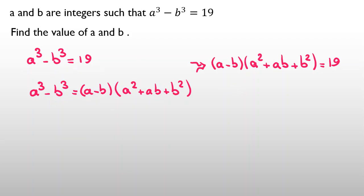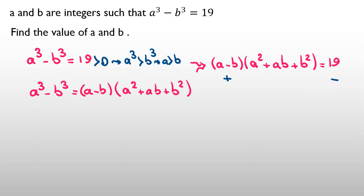Now we know that 19 is positive, so a³ minus b³ is positive, which means a³ is greater than b³, and we conclude a is greater than b. So a minus b is positive. Since the product is 19 which is also positive, this second factor is also positive.